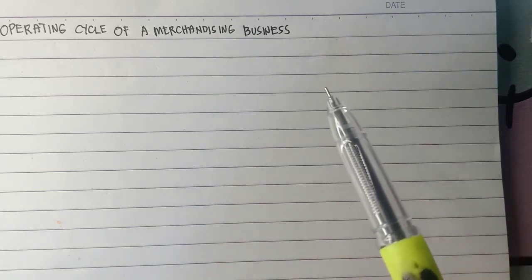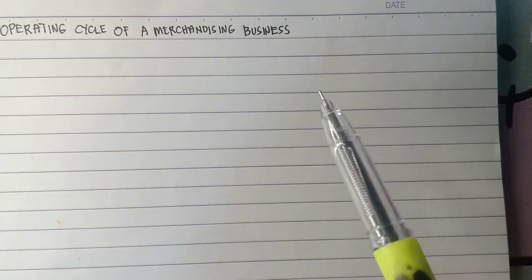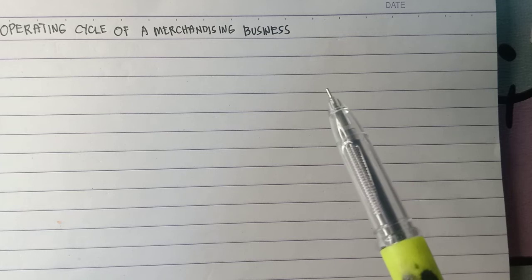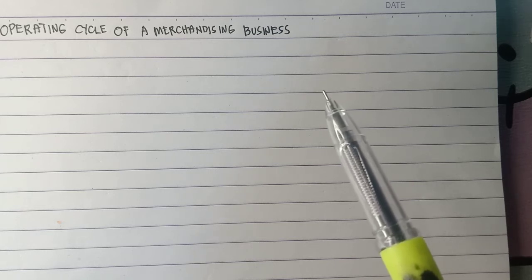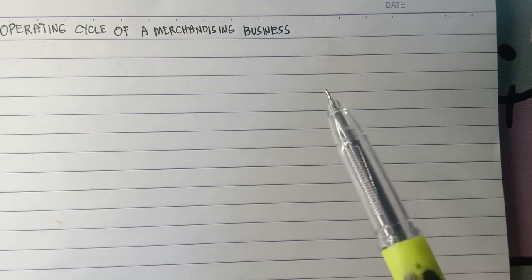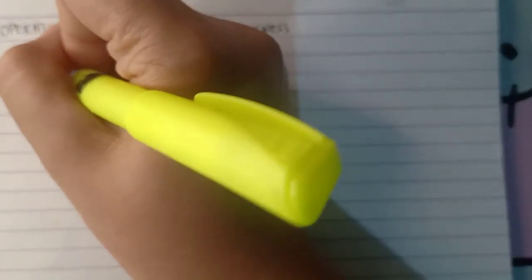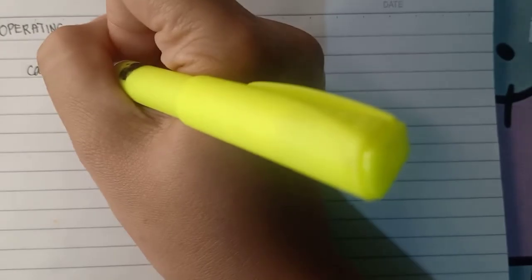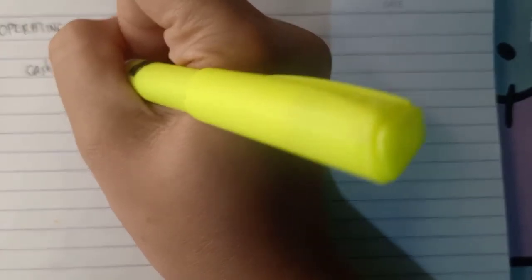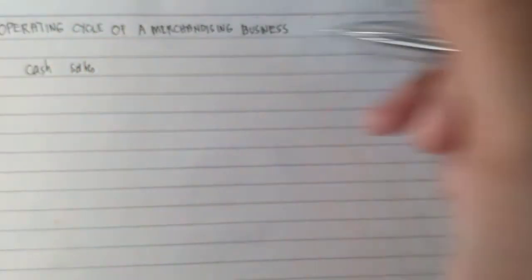In accounting, we have two kinds of operating cycle: we have cash sales and sales on account.